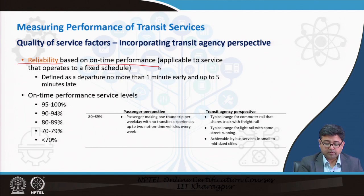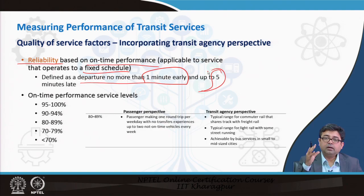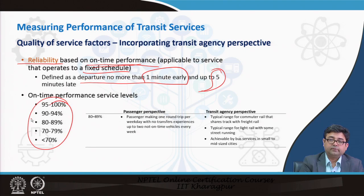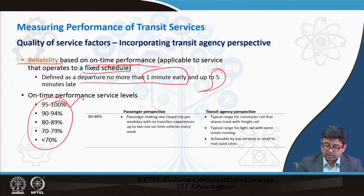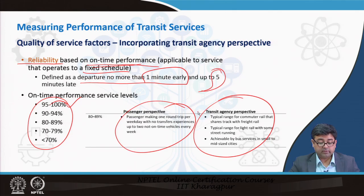Reliability means on-time performance, applicable to service that operates on a fixed schedule, defined as departure no more than 1 minute early and up to 5 minutes late. If your transit vehicle arrives within this time frame, it is said to be on time. If 95 to 100 percent of all vehicles arrive within this window, then your system is operating at a 95 to 100 percent performance level. That is how each perspective is captured in the performance table.